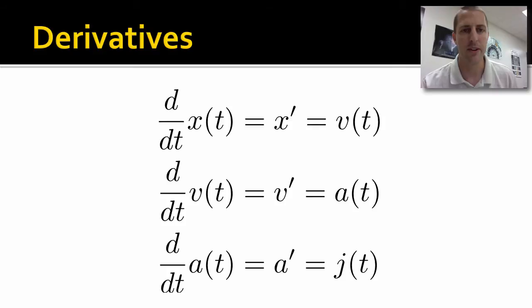The way you read that is the derivative of position with respect to time. You could shorthand that by saying x prime. It's just a way of writing things. The derivative of position with respect to time is velocity as a function of time. Same thing, derivative of velocity with respect to time is acceleration. And the derivative of acceleration with respect to time gives us the jerk as a function of time.